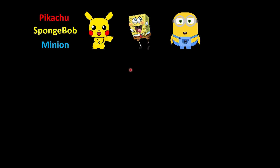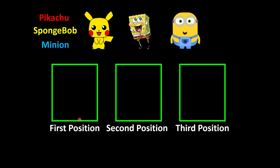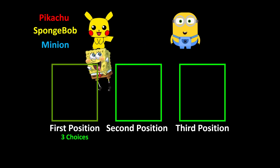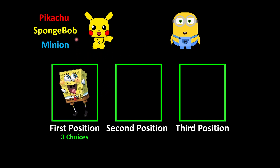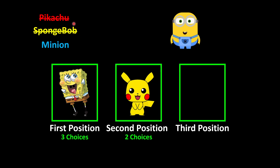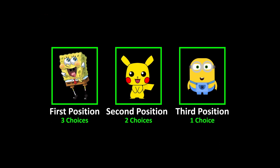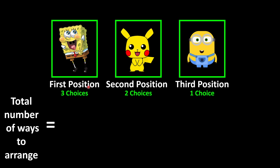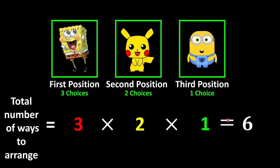Now let's look at permutation without repetition. Say we have Pikachu, Spongebob, and Minion, and we want to find how many ways we can arrange their positions. We have 3 slots. For the first position, we have 3 choices. Once we pick Spongebob, he's no longer available, leaving 2 choices for the second position. After picking Pikachu, only Minion remains for the third. Using the multiplication rule: 3 × 2 × 1 = 6 possible arrangements.